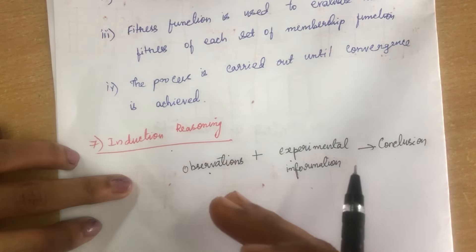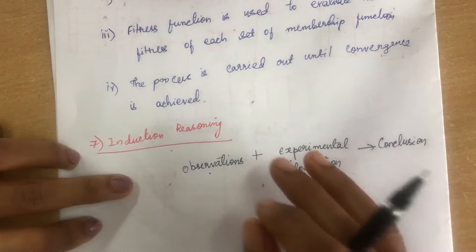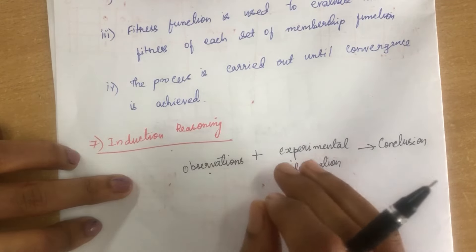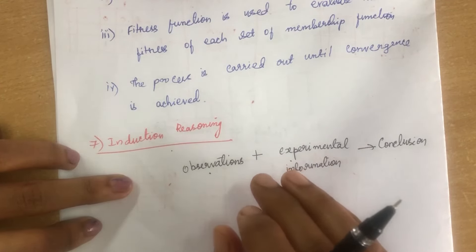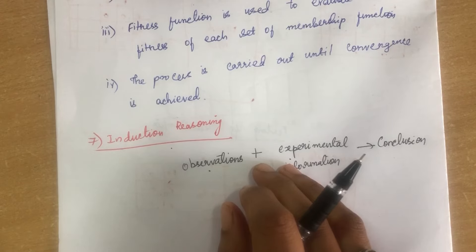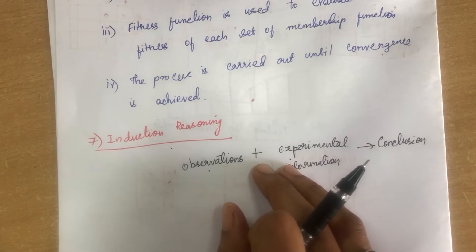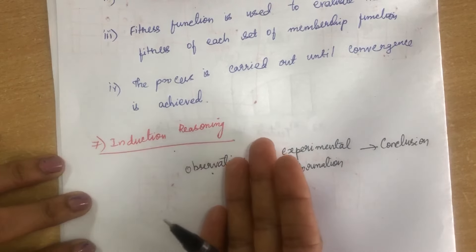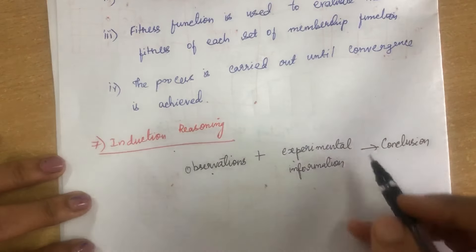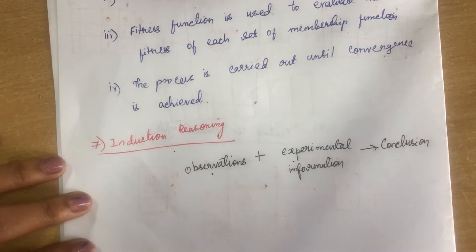In this video, we have seen seven methods to find fuzzy membership values: intuition method, inference method, rank ordering, angular fuzzy set, neural networks, genetic algorithm, and inductive reasoning. I hope this video will be very useful for finding fuzzy membership values. Thank you all for watching.